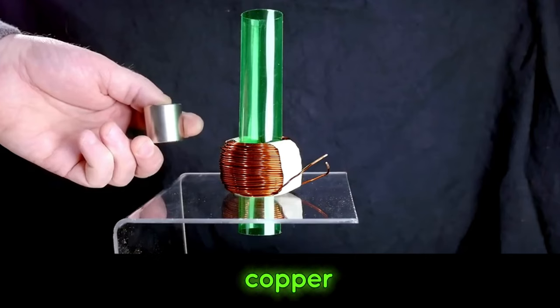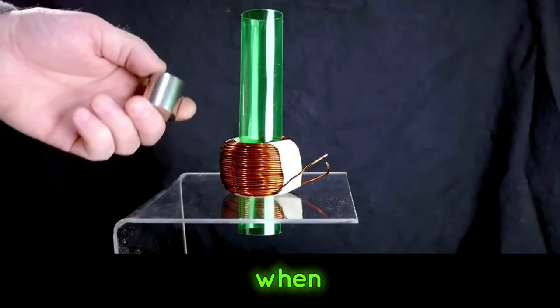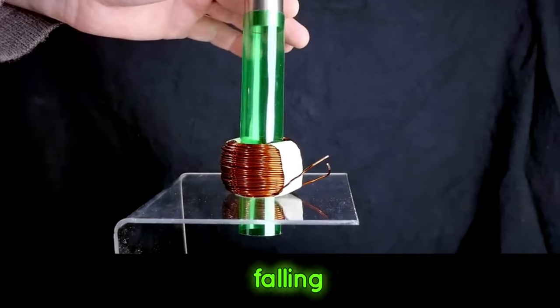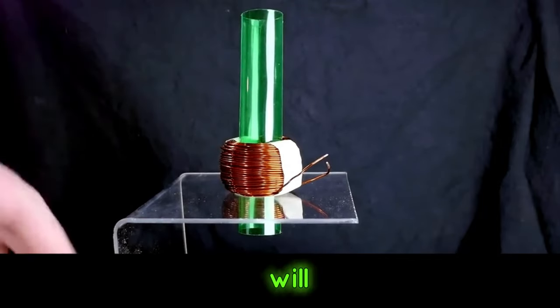If you replace the copper pipe with a coil, when the coil is not closed, the magnet is falling fast and will not be hindered.